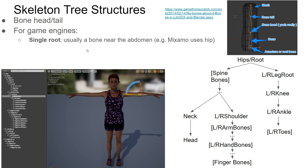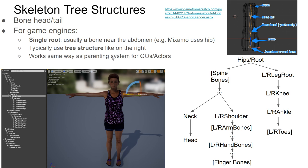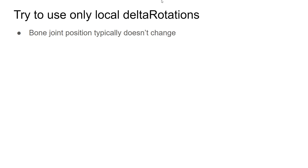You can define animations as just a transformation of bones. Similar to how blend shapes describe each shape as a change in vertex location, skeletal animations are described as a change in location or rotation of each bone. We generally think of skeletons as tree structures — a bone has a head, which is what the bone rotates around. For example, your actual head rotates around a joint inside your neck, and in game engines we try to have a single root, usually near the abdomen.